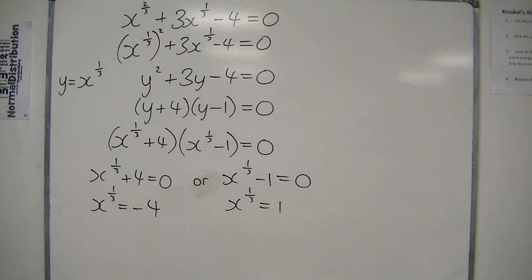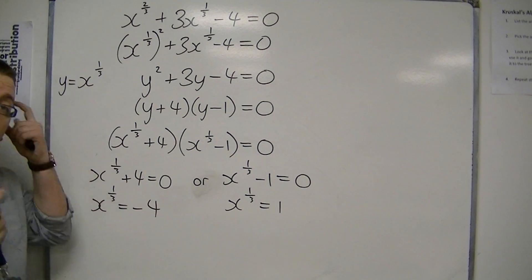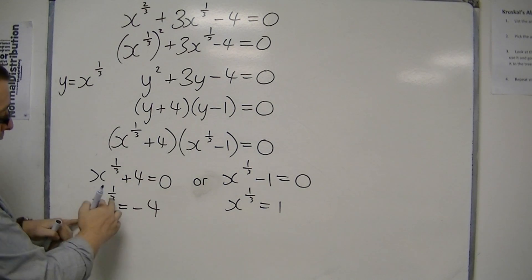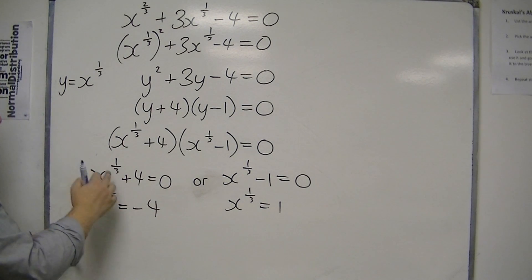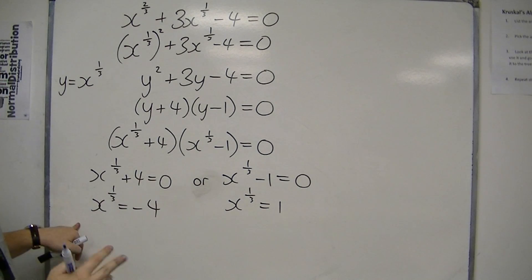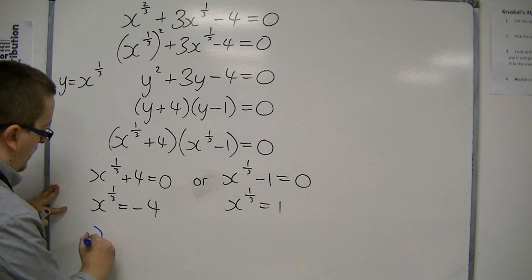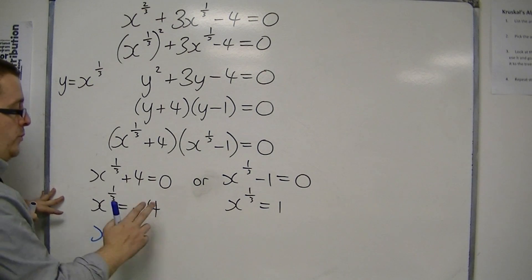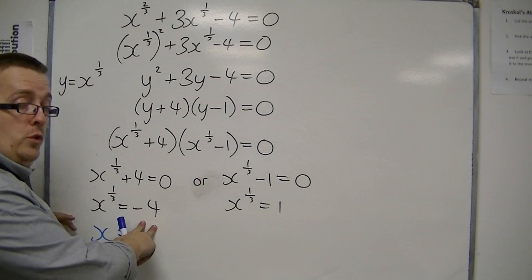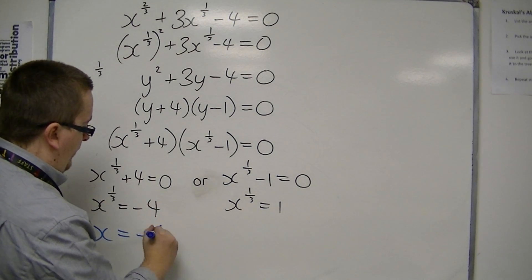And now, in order to solve this equation, to eliminate the 1 third, I'm going to have to cube the left-hand side, so I'm going to have to cube the right-hand side of the equation as well. So x is equal to the cube of minus 4, which is minus 64.